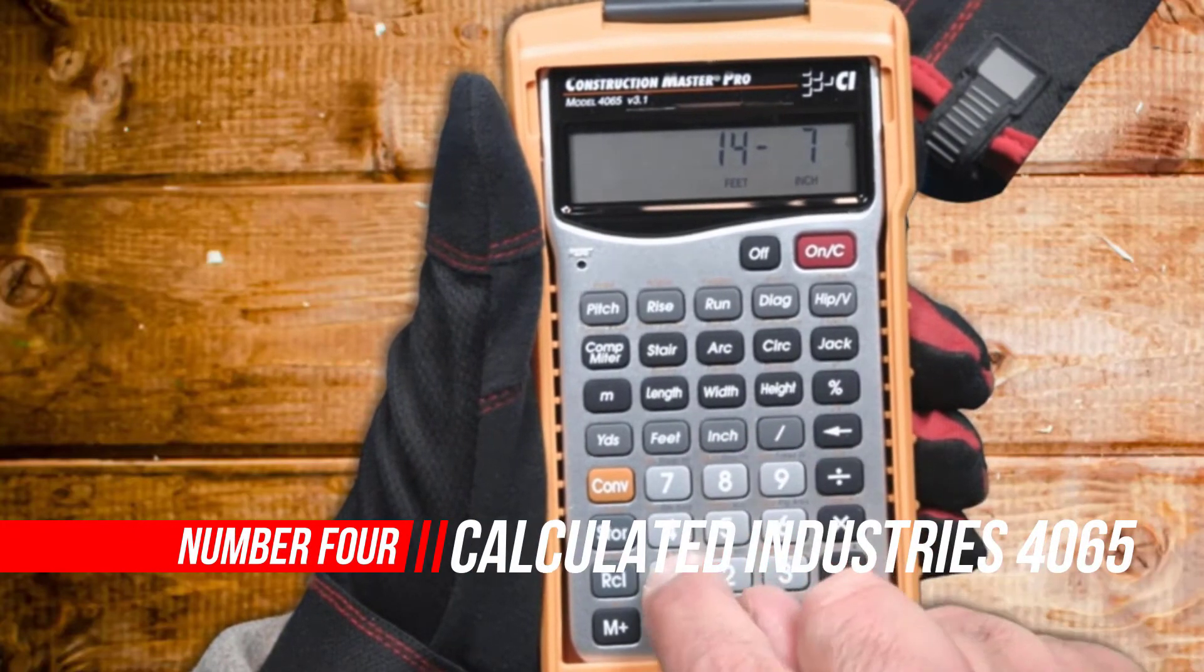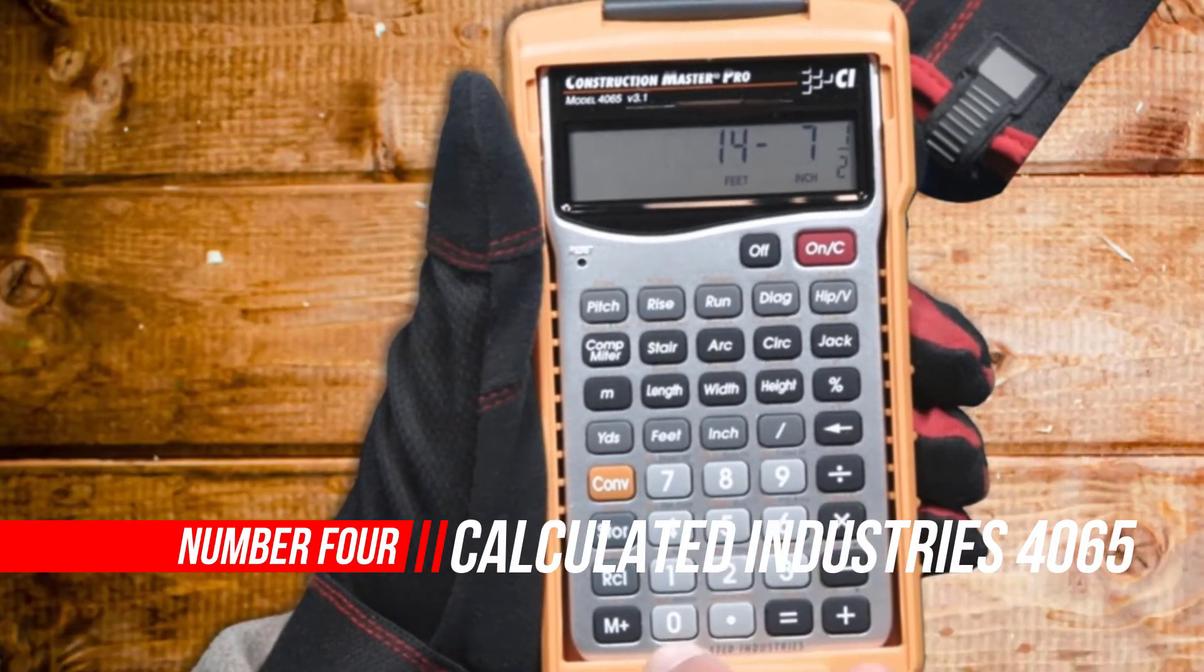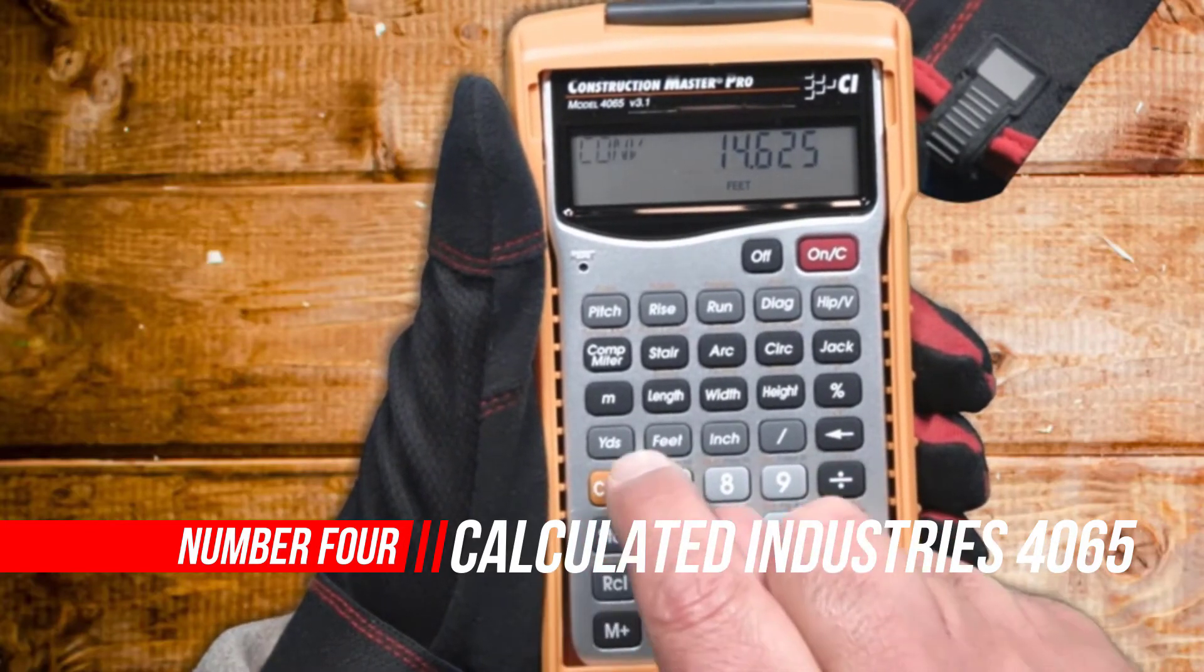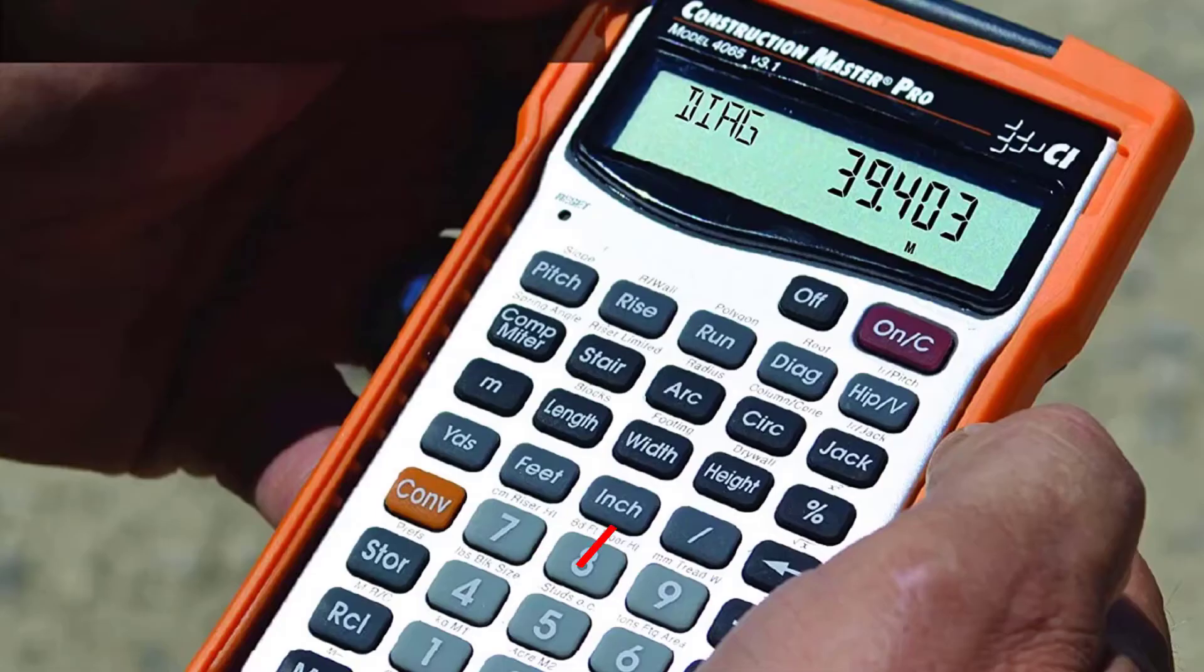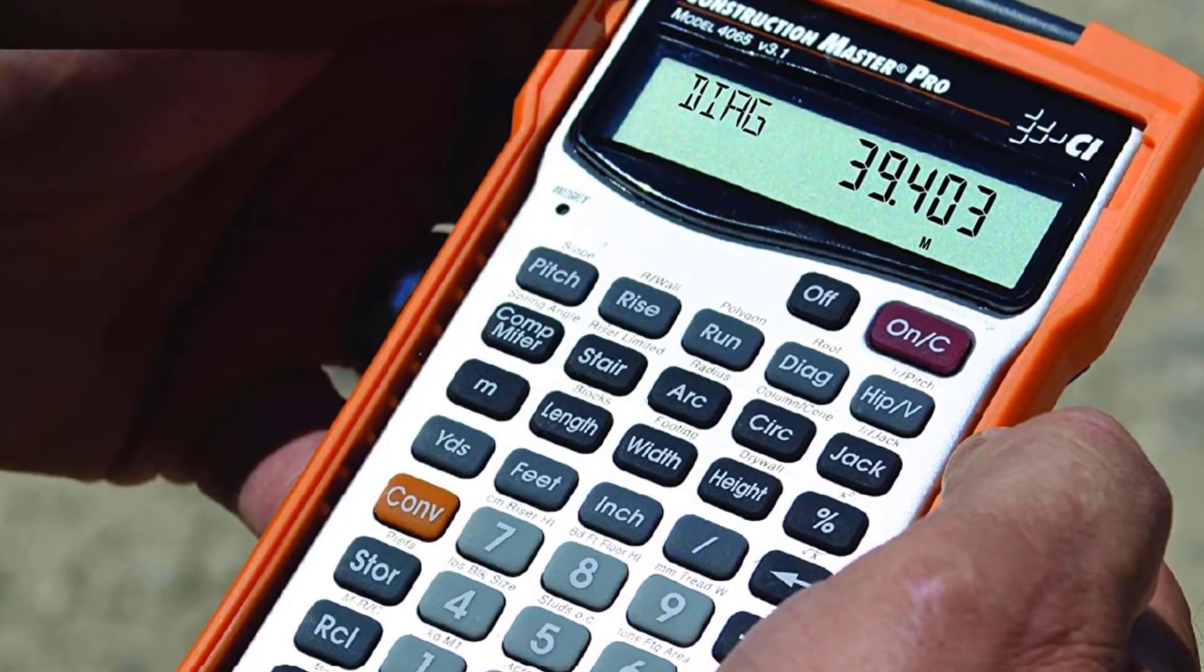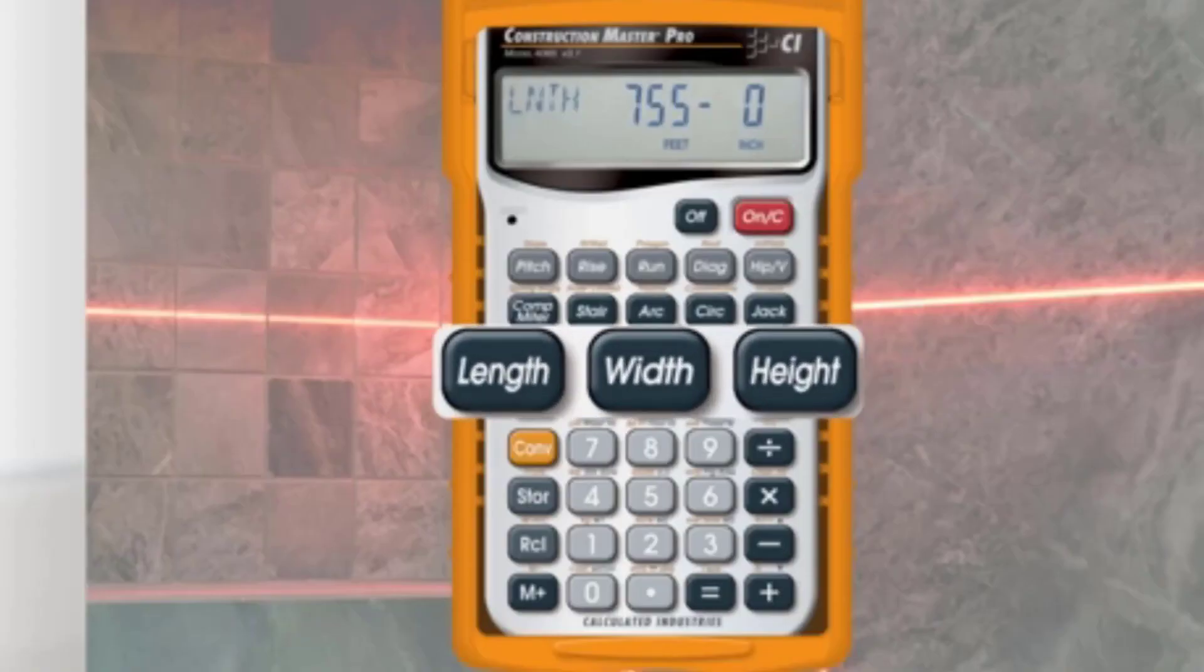Number 4. Calculated Industries 4065 Construction Master Pro. The Construction Master Pro is an award-winning advanced feet-inch fraction construction math calculator with powerful built-in solutions perfect for completing layouts, plans, bids and estimates.